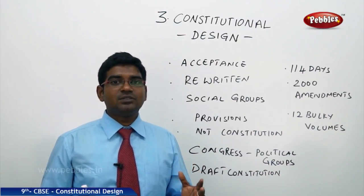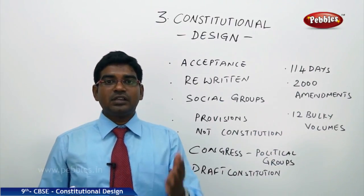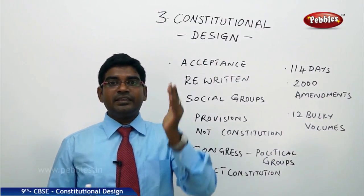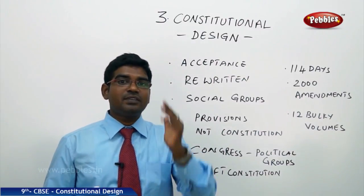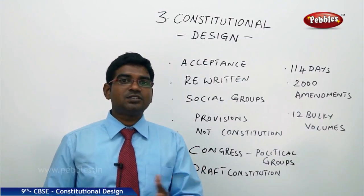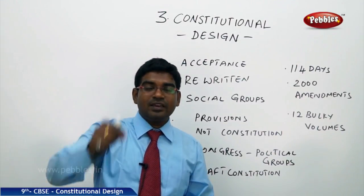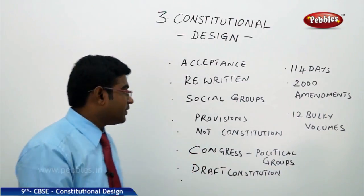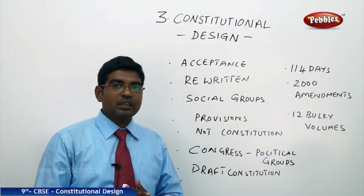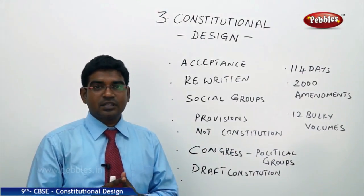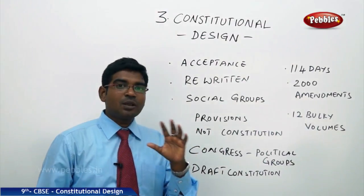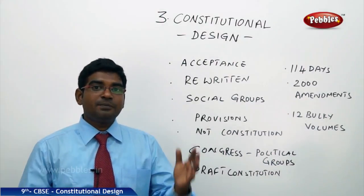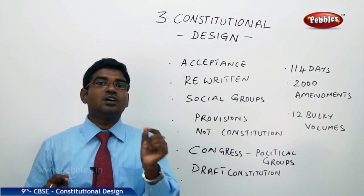What gave the Indian constitution the ability to satisfy and justify any question raised by social or political groups? The answer is clear: when the constitution was being drafted, the Constituent Assembly included many social groups. The provisions present in the constitution were first debated thoroughly in the Constituent Assembly before being included.